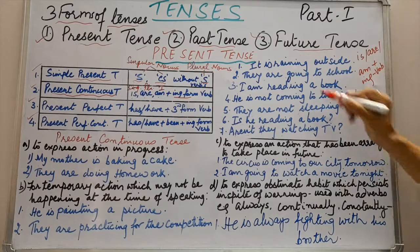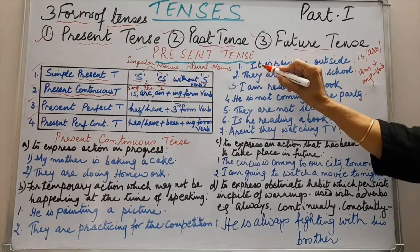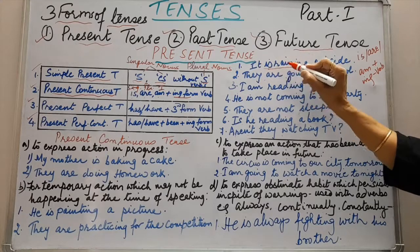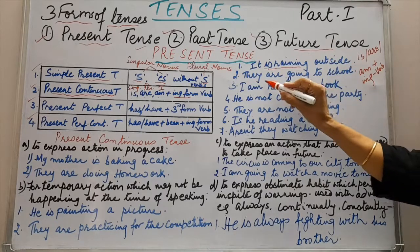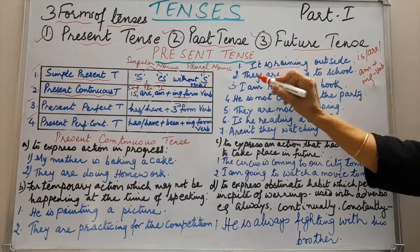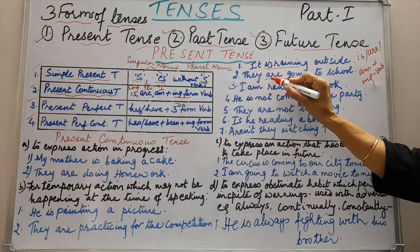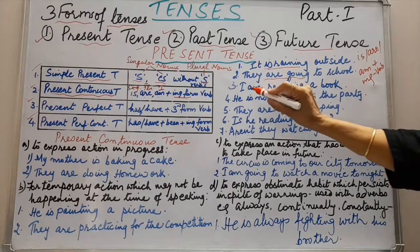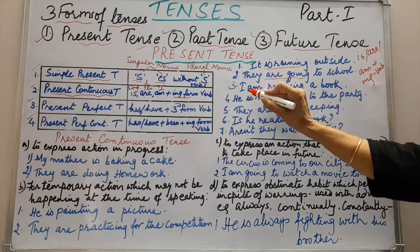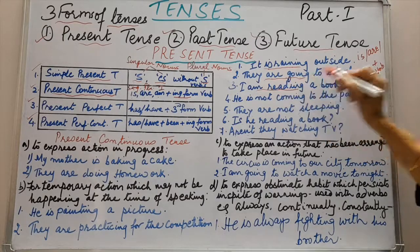Let us see examples of present continuous tense. It is raining outside — it is a pronoun, so we have used is plus ing form of verb. They are going to school — they is plural, so we have used are plus ing form of verb. I am reading a book — am is used with I, plus ing form of verb.